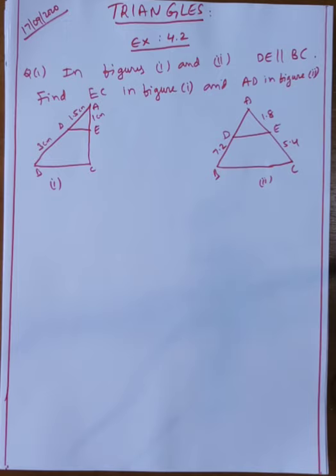If a line is drawn parallel to one side of the triangle to intersect the other two sides in distinct points, then the other two sides are divided in the same ratio. I already explained that one and the converse as well. Whenever that line is parallel to one side, it divides the remaining two sides in the same ratio.